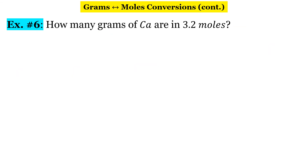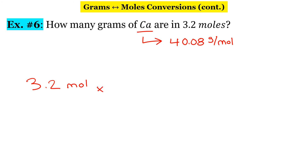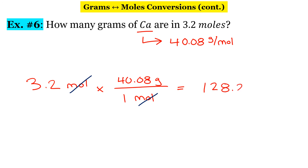In our final example: how many grams of calcium are in 3.2 moles? This one isn't as complicated because we're only dealing with one element. Looking up calcium on the periodic table, its molar mass is 40.08 grams per mole. We have 3.2 moles, and for every one mole of calcium we have 40.08 grams. Our units cancel because they're diagonal from each other.